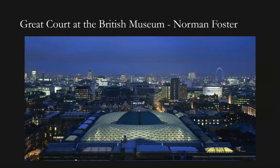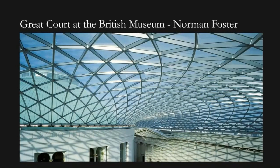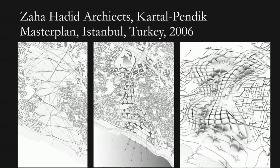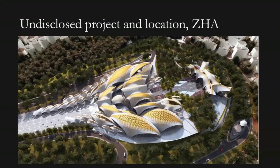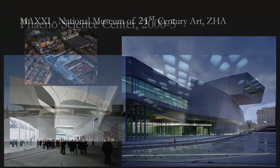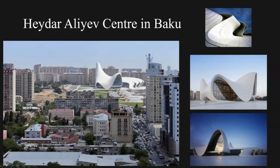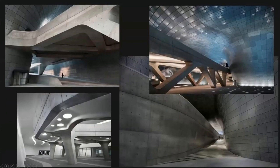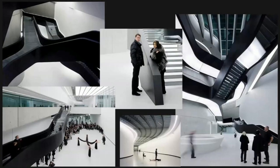In conclusion, parametric architecture's journey is a testament to human creativity and the continuous pursuit of innovation in the built environment. It builds upon the foundations laid by historical pioneers and movements, embracing digital tools and generative processes to shape the future of architecture. As parametric architecture continues to evolve, it will undoubtedly leave an indelible mark on the architectural landscape, redefining our understanding of what is possible in the world of design and construction. Patrick Schumacher's contributions to parametric architecture underscore the movement's capacity to push the boundaries of architectural design and pave the way for a more dynamic and responsive built environment, with his visionary thinking continuing to inspire architects to explore the limitless possibilities offered by parametric design principles.